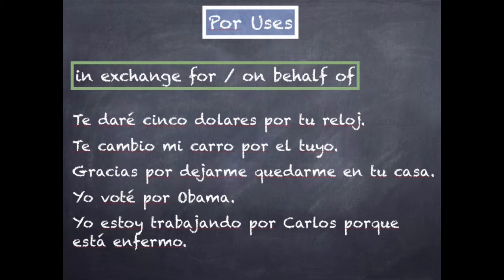Gracias por dejarme quedarme en tu casa. After gracias, or anything that expresses thanks — te agradezco por — you always use por. Yo voté por Obama — since there's a kind of representation going on where Obama represents me, voting for him uses por. Yo estoy trabajando por Carlos porque está enfermo — I'm working on behalf of Carlos, for Carlos, because he's sick.